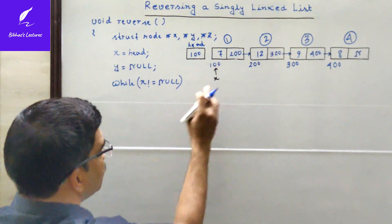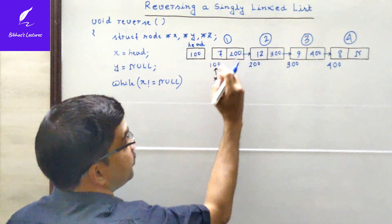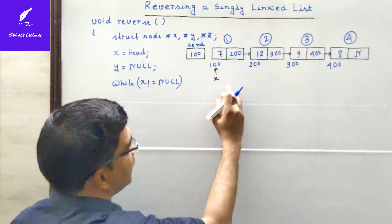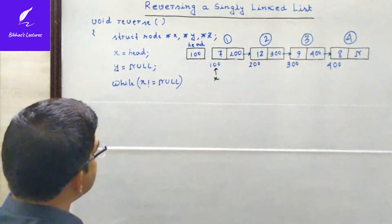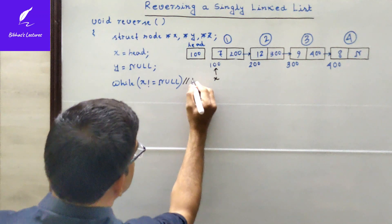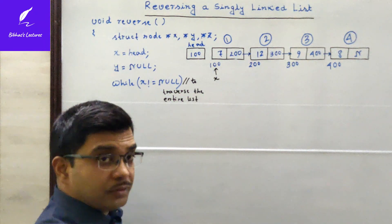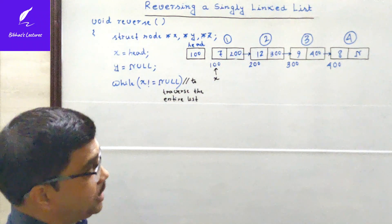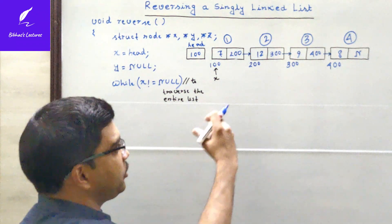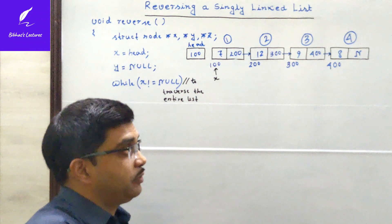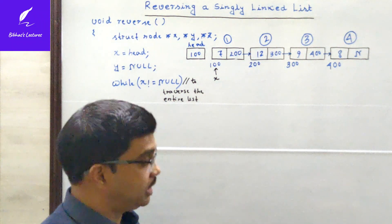We will also draw another figure to depict the actual scenario after reversing the entire list. The same four nodes are drawn with their addresses and data parts shown — the next parts will change since the list will be reversed. We start executing the while loop. The value of x is 100, which is not equal to null, so the condition is true and we enter the loop.